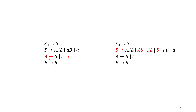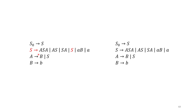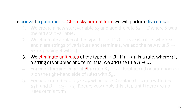Continuing, we now want to eliminate rules that have only one variable on the right-hand side — these are called unit rules. Remember, when we have variables on the right-hand side, there must be exactly two. So we eliminate ones with fewer than two, and we'll also deal with ones that have more than two in a moment.